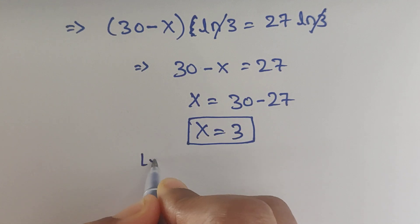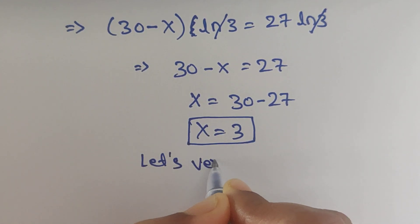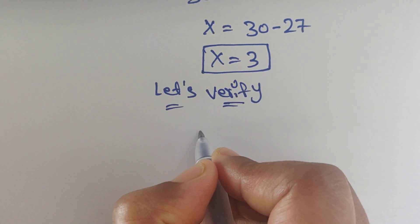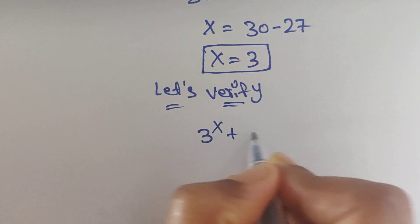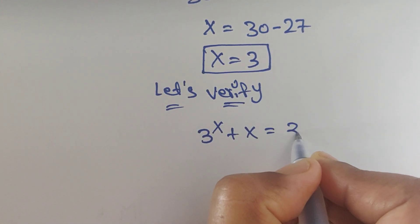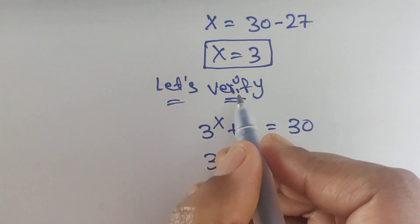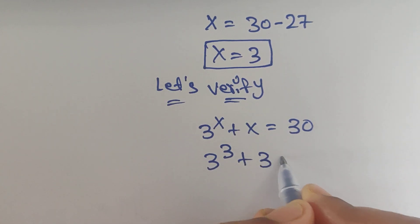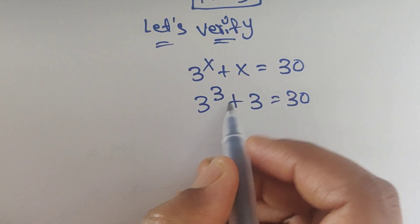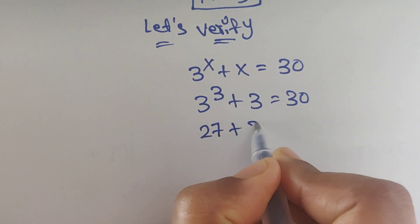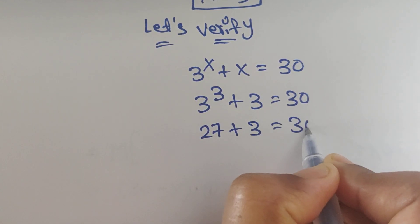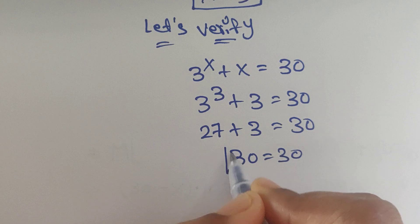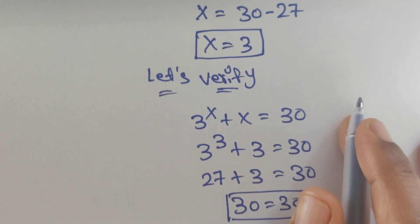Let's verify. The original equation is 3^x plus x equals 30. Substituting x equals 3: 3^3 plus 3 equals 27 plus 3 equals 30. This is true, so x equals 3 is confirmed.